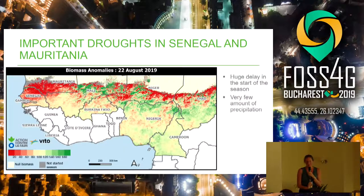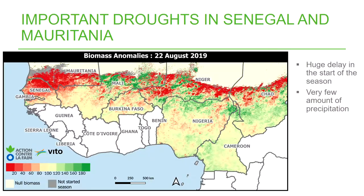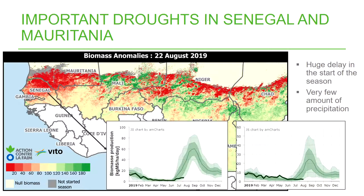For a quick update of the current situation: we are really anxious about Senegal and Mauritania, because big droughts are occurring. When we look at the vegetation profile, we see about a two-month delay in the start of the growing season. Even if rain started now — and in Senegal it has started to rain — we're not sure this is recoverable because the delay is so large. So we are getting ready for response and emergency actions.